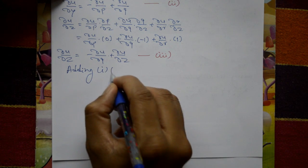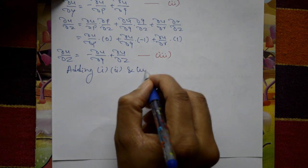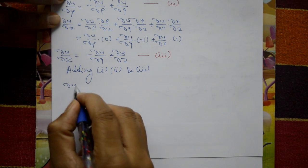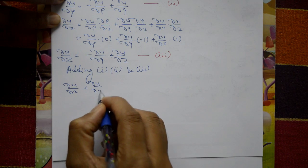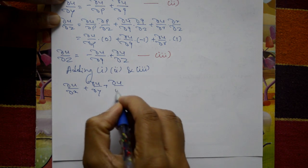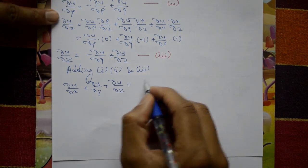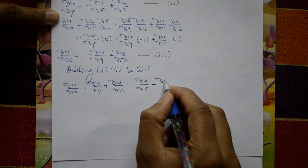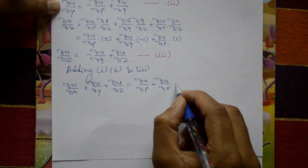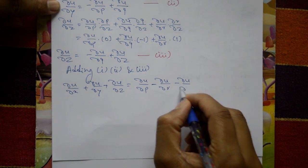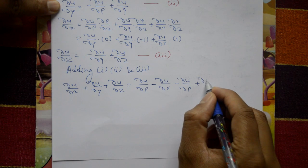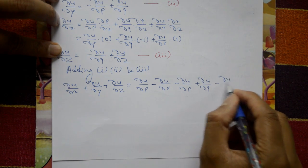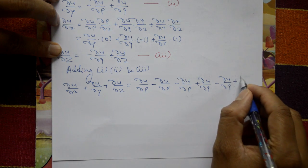Adding equations one, two, and three: ∂u/∂x + ∂u/∂y + ∂u/∂z = (∂u/∂p − ∂u/∂r) + (−∂u/∂p + ∂u/∂q) + (−∂u/∂q + ∂u/∂r). All terms cancel, giving 0. Required answer is proved.